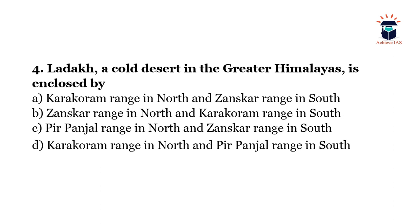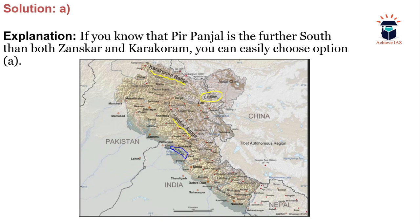Next question: The Ladakh cold desert in the Greater Himalayas is enclosed by — A) Karakoram Range in the north and Zanskar Range in the south; B) Zanskar Range in the north and Karakoram Range in the south; C) Pir Panjal Range in the north and Zanskar Range in the south; D) Karakoram Range in the north and Pir Panjal Range in the south. The answer is A. Karakoram is at the top, then comes the Ladakh cold desert, then the Zanskar Range. Pir Panjal is further south. The order is: Karakoram → Ladakh → Zanskar → Pir Panjal. Please remember this sequence — it is very important.